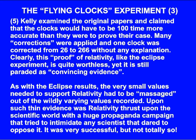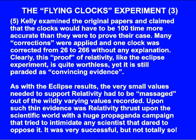Kelly examined the original papers and claimed that the clocks would have to be 100 times more accurate than they were to prove their case. Many corrections were applied, and one clock was corrected from 26 to 266 without any explanation. Clearly, this proof of relativity, like the eclipse experiment, is quite worthless, yet it is still paraded as convincing evidence. As with the eclipse results, the very small values needed to support relativity had to be massaged out of the wildly varying values recorded. Upon such thin evidence was relativity thrust upon the scientific world with a huge propaganda campaign that tried to intimidate any scientist that dared to oppose it. It was very successful, but not totally so.